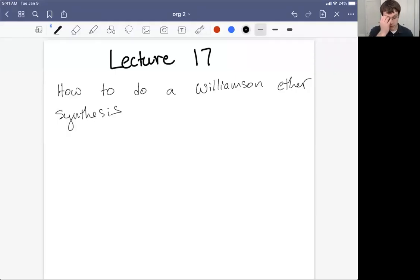In this lecture, we're going to look at how to actually do a Williamson ether synthesis. We're going to first make or buy an alkoxide.